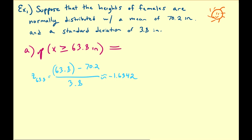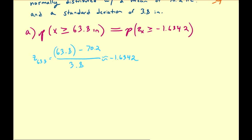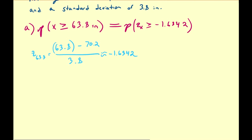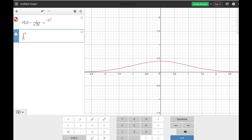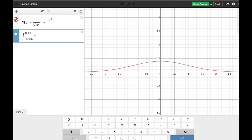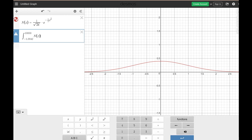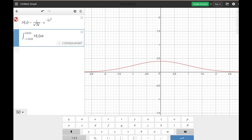So that means this probability is the same thing as finding the probability that the z-score for x is larger than or equal to negative 1.6842. This is just an area under the standard normal distribution. So that means this is going to be equal to the integral from negative 1.6842 to positive infinity of the standard normal distribution with respect to z. So I'm going to call infinity 10,000 for this, and that gives us 0.9539.